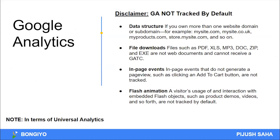When we push data from Google Tag Manager, we talk about data structure. If you want more than one website domain or sub-domain — for example, mysite.com, mysite.co.uk, myproducts.com, or sub-domains like store.mysite.com or blog.mysite.com — by default we will track our website. Even for sub-domains, we will do filtering; it's not done automatically by default.